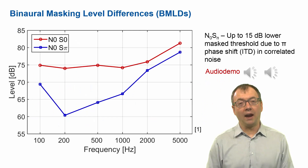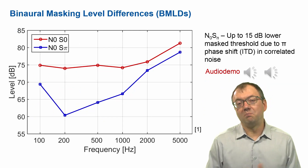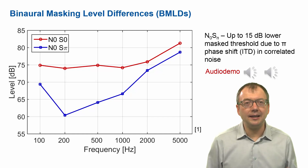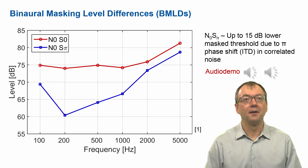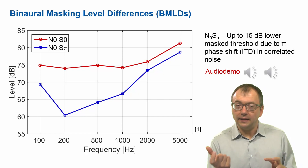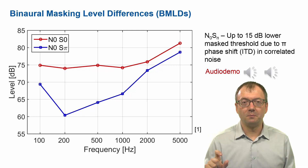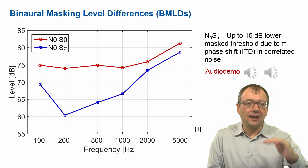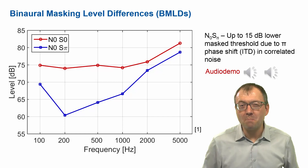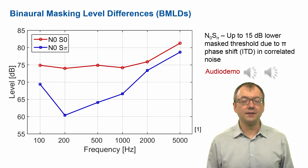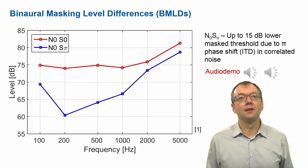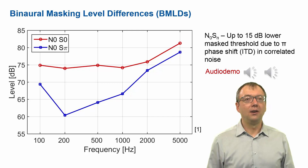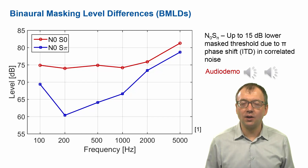The red curve in this graph gives you the threshold in monaural conditions — or here diotic listening, where you may be slightly better but still very similar to monaural listening. Now if you introduce the phase change in the signal but keep the noise diotic — still the same on both ears — suddenly you can hear the tone, and we have a massive benefit from having that phase difference, which is equivalent to a time difference between the ears. We gain up to 15 decibels in threshold, which is a massive improvement and makes the tone really stand out.